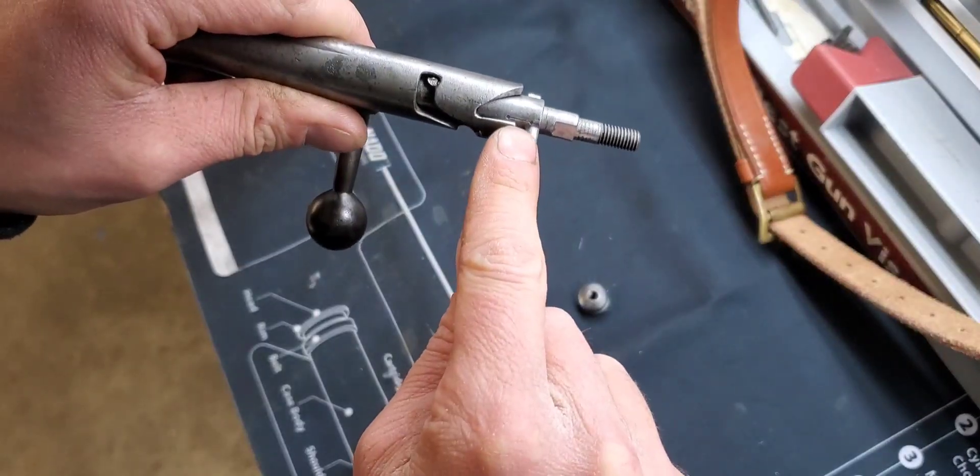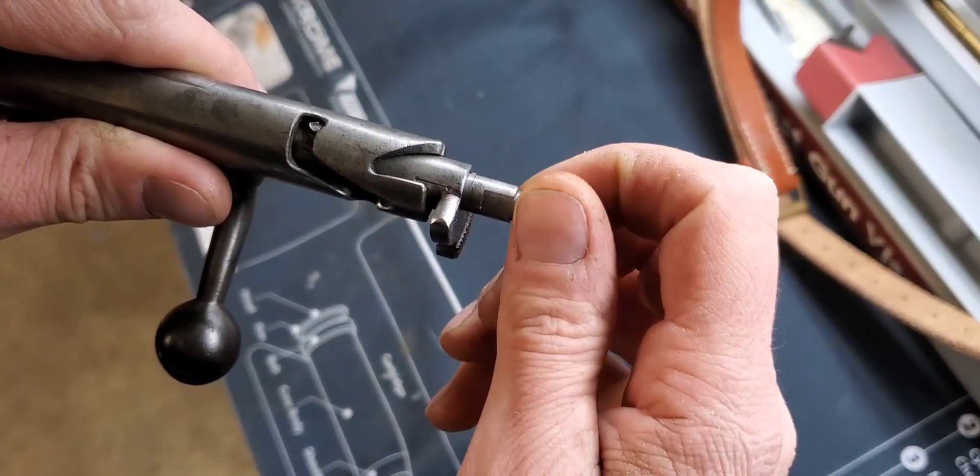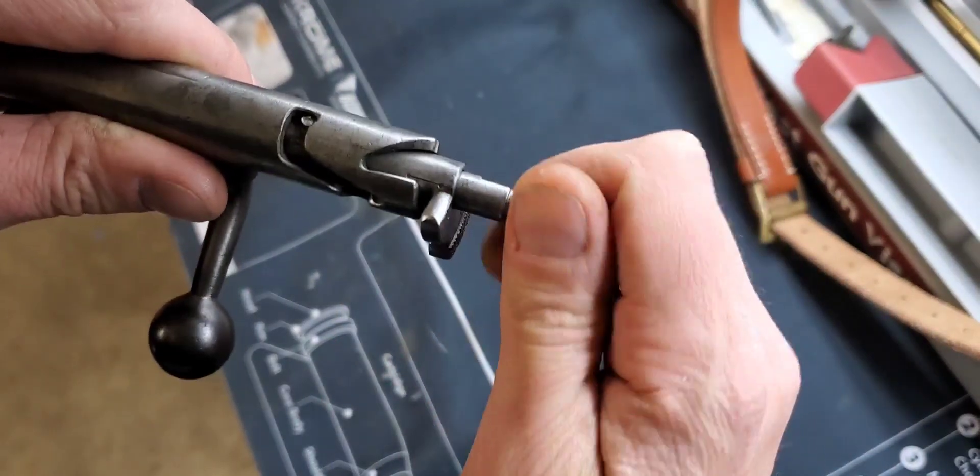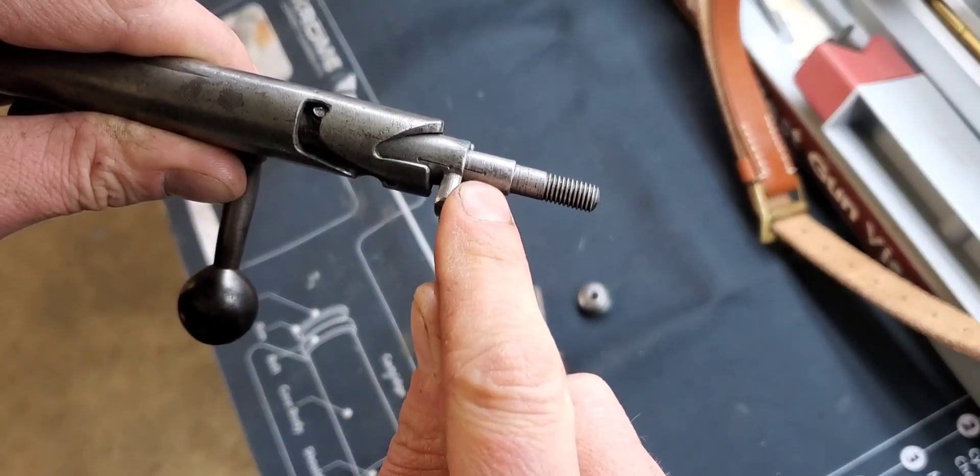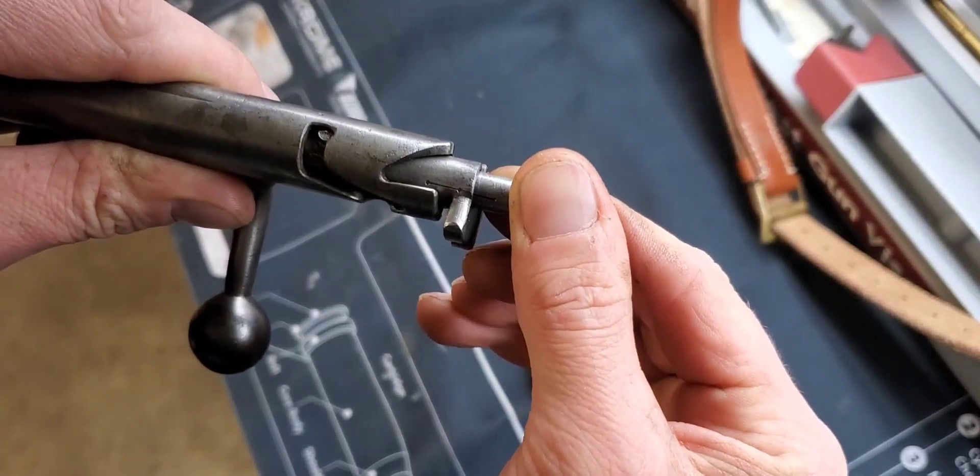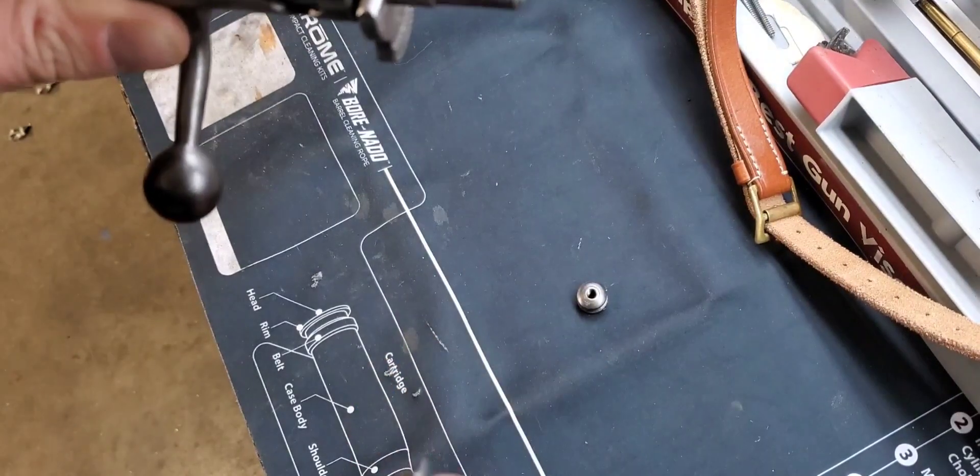Now from here we have a line inscribed on the safety piece and we're gonna rotate our firing pin and line up the line on the firing pin with the safety piece. Make sure that everything's all good and aligned.